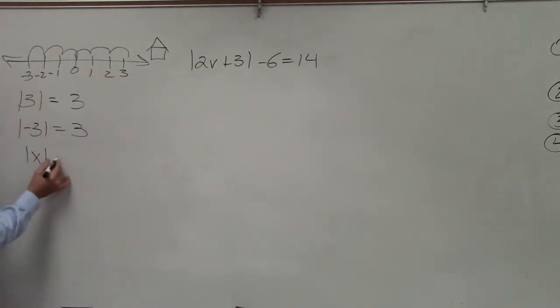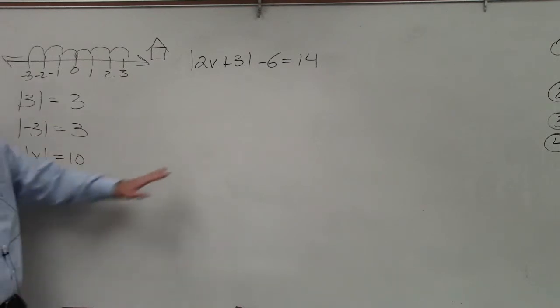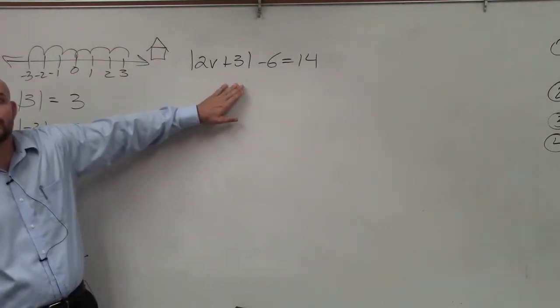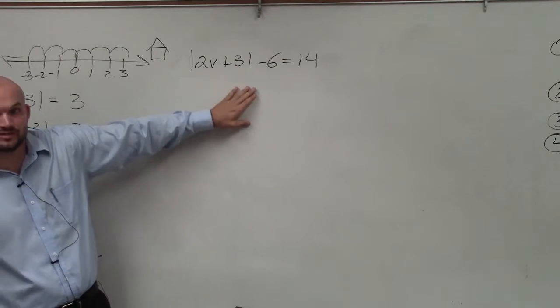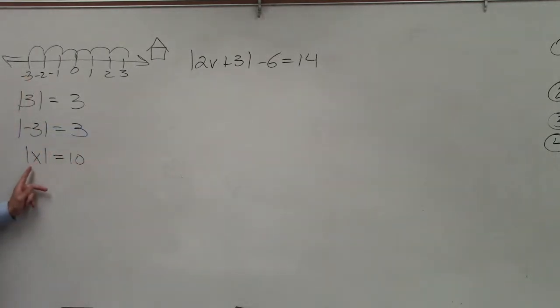So when I have absolute value of x equals 10, you understand that there could be two numbers that could be in for x. It could be positive x or it could be a negative x. There could be two answers. So when we're solving absolute value equations, we're going to be looking for two answers, the answer that makes this positive and the answer that's going to make that negative.